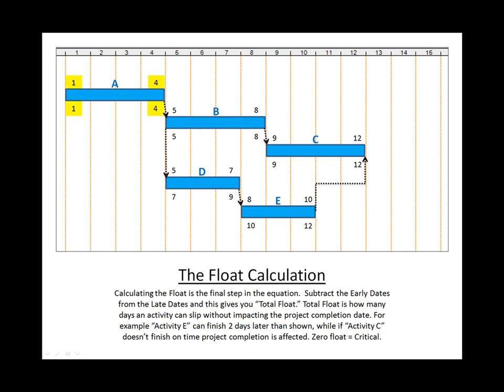Total float is how many days an activity can slip without impacting the finish date. For example, activity E can finish two days later than shown, while if activity C doesn't finish on time, project completion is affected. Zero float equals critical.